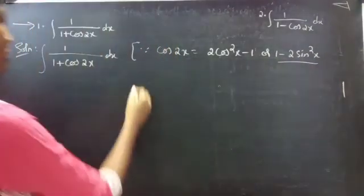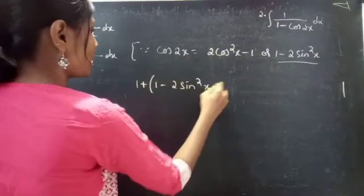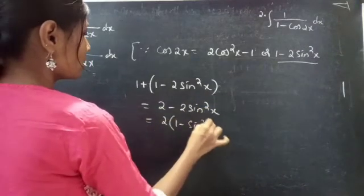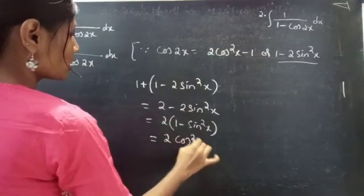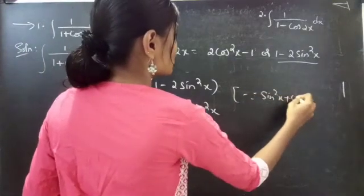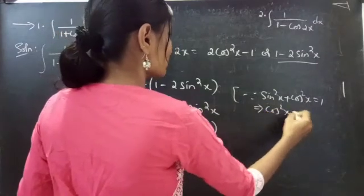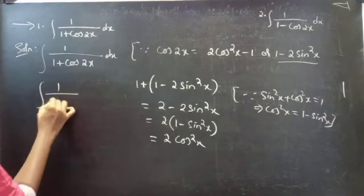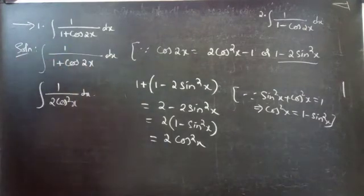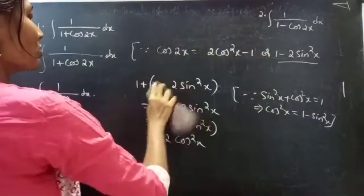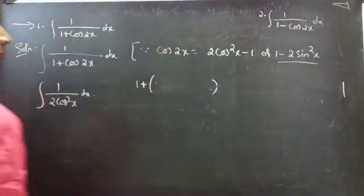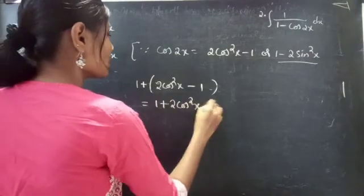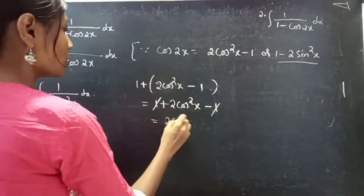If we choose 1 minus 2sin²x, we get 1 plus 1 minus 2sin²x, which equals 2 minus 2sin²x. Taking 2 common gives 2(1 minus sin²x), and since sin²x + cos²x = 1, this becomes 2cos²x. Alternatively, choosing 2cos²x minus 1 gives 1 plus 2cos²x minus 1, and the plus 1 and minus 1 cancel to give 2cos²x.